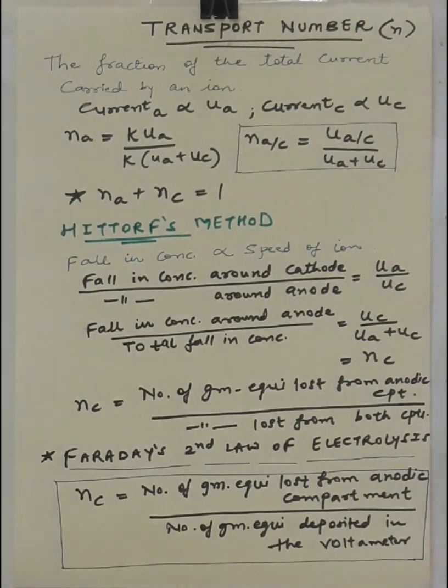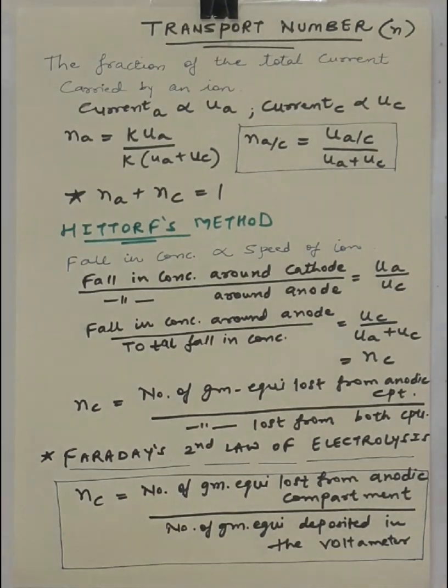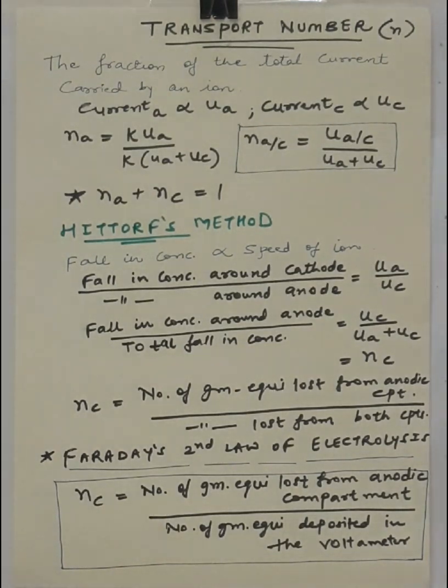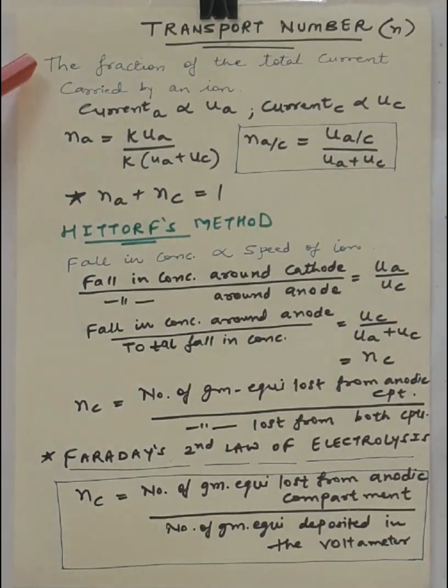Transport number is also called as transference number or Hittorf's number. You are aware about the concept of electrolysis. When an electric current is passed, the ions migrate towards the electrodes. During this process, each ion carries a definite fraction of the total current depending upon its speed. This fraction of the total current carried by an ion is called its transport number.